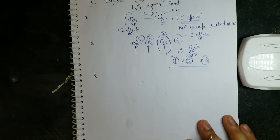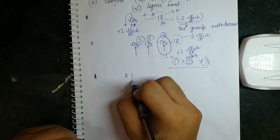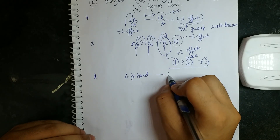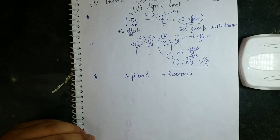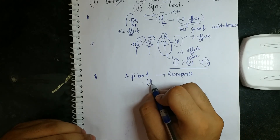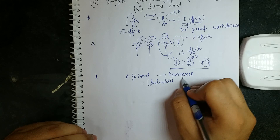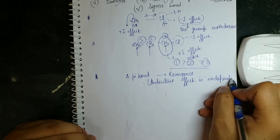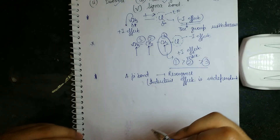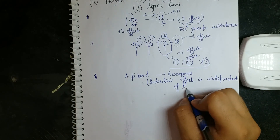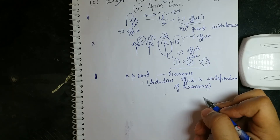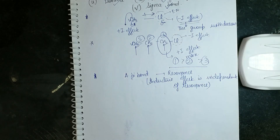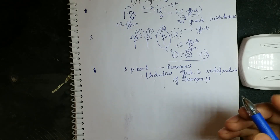Inductive effect travels only through sigma bonds. If there is a pi bond with lone pairs or conjugation, resonance can happen instead. Inductive effect is independent of resonance — this is a major source of confusion. Remember: for inductive effect, only consider electronegativity and distance, and it travels only through sigma bonds, not pi bonds.